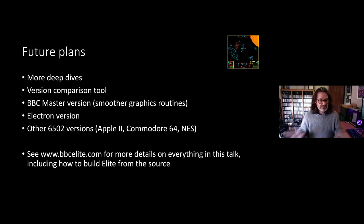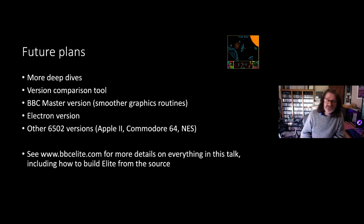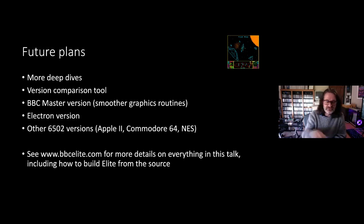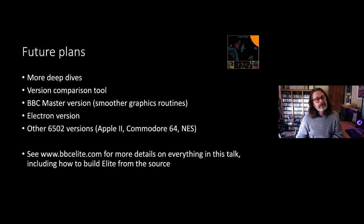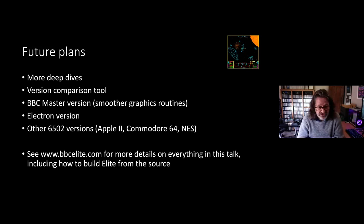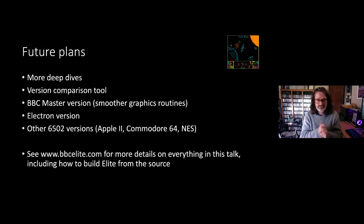For future plans: I'm going to add more deep dives on the site. The next big task is a version comparison tool so you can compare different versions at the instruction level to see exactly what differs between them, including different releases of the same version. I'd probably also look at the BBC Master version's graphics routines, which are smoother, and possibly the Electron version. If you're interested in everything from this talk and the previous one, bbcelite.com is the URL — it has loads of information and links to the Git repositories where you can build your own versions of Elite from the source.